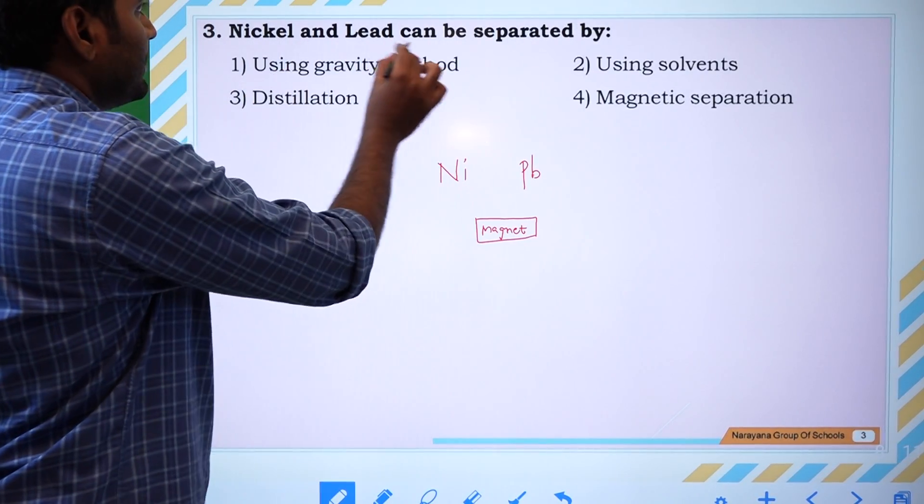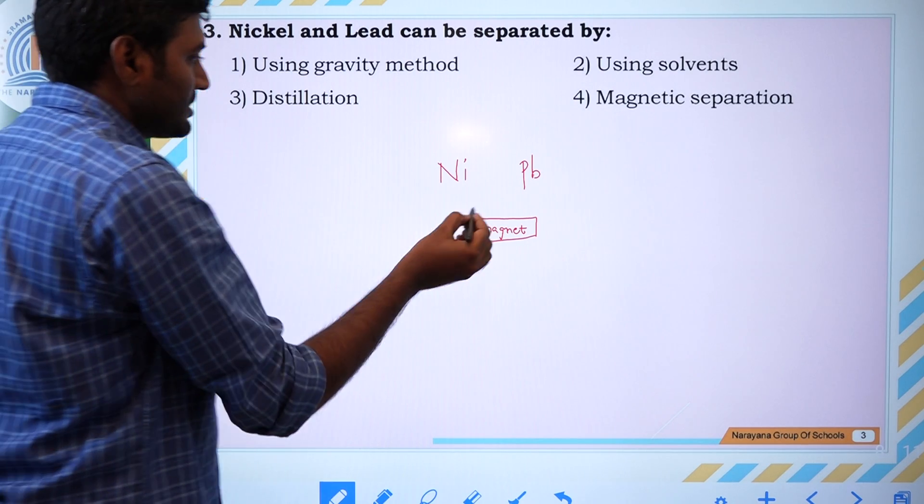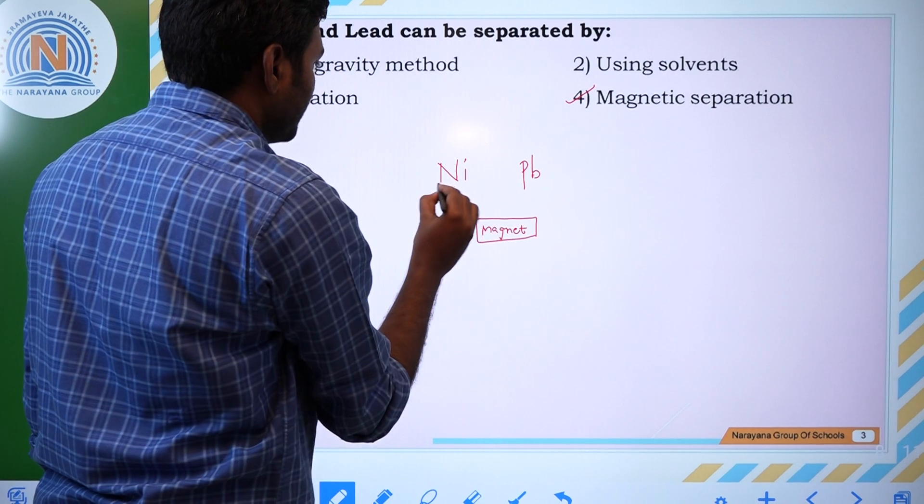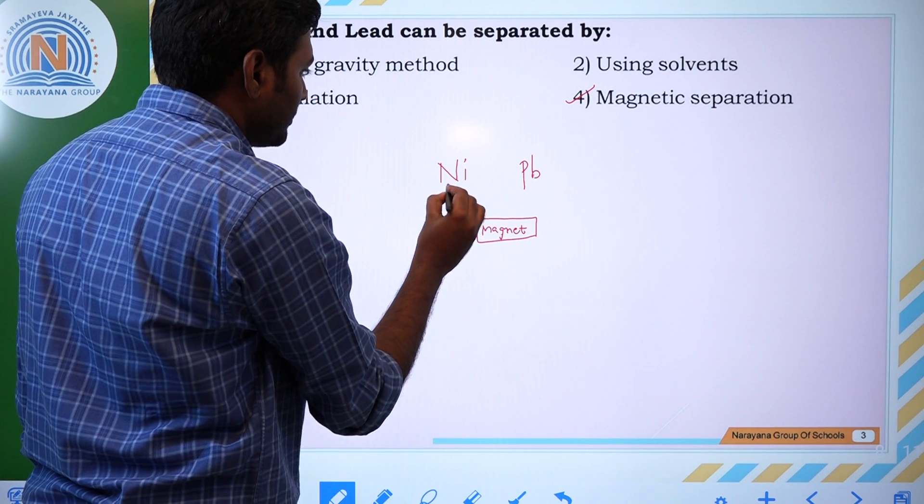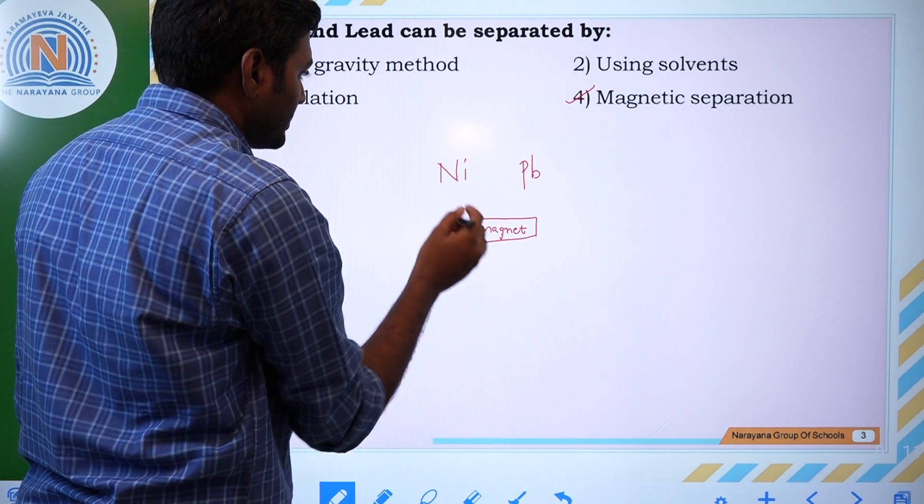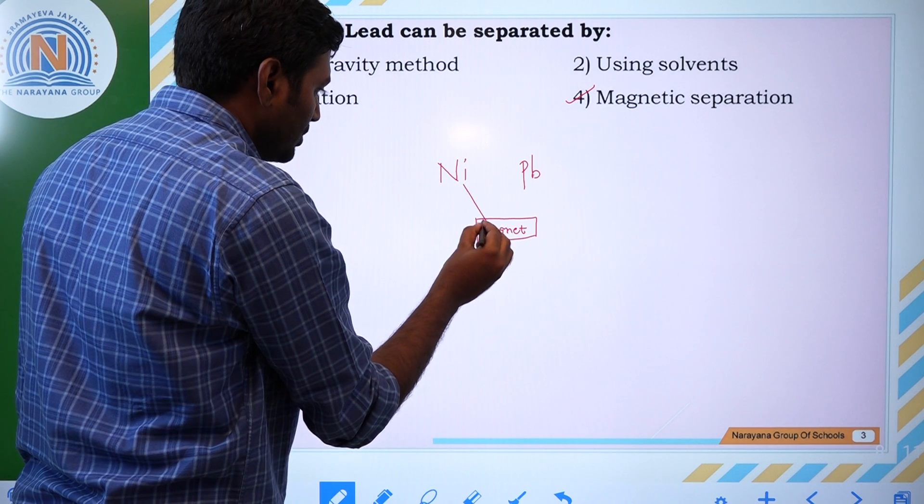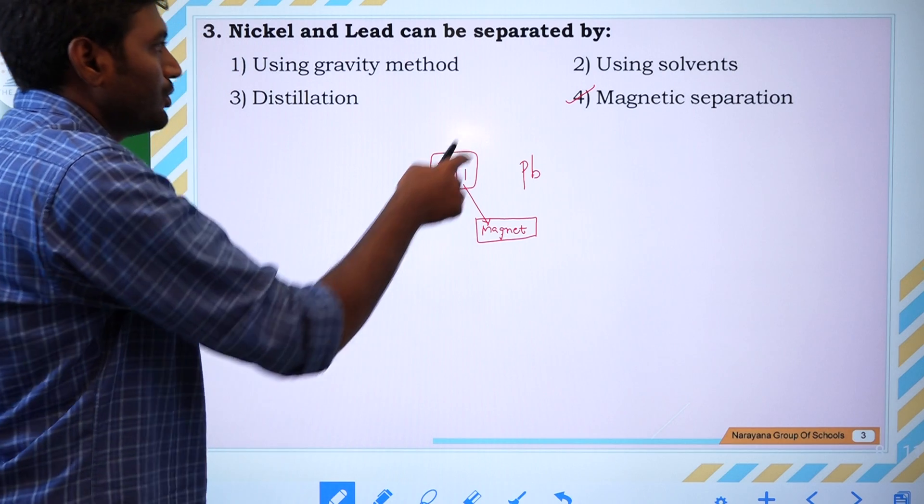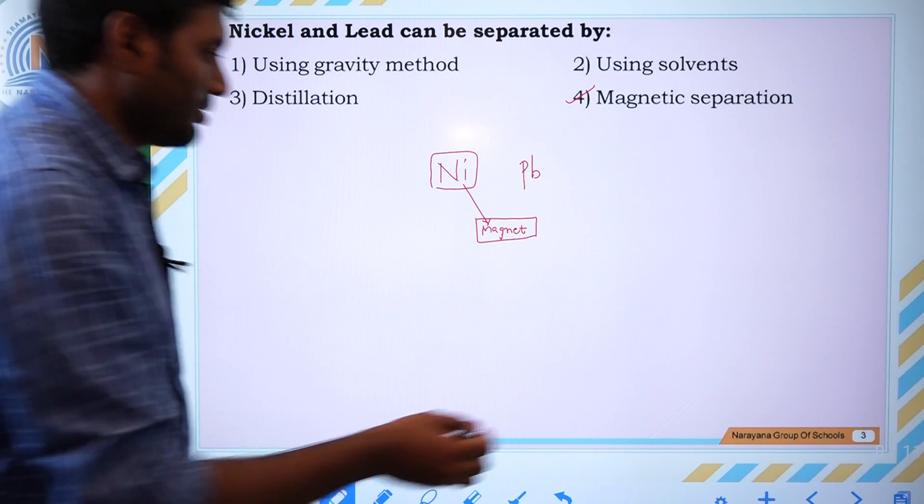Nickel and lead can be separated by magnetic separation. Whenever we introduce a magnet to the nickel and lead mixture, nickel is attracted towards the magnet due to its magnetic nature. Hence, we use magnetic separation.